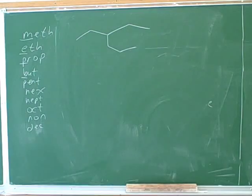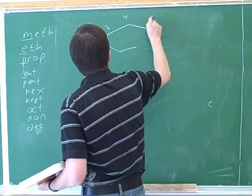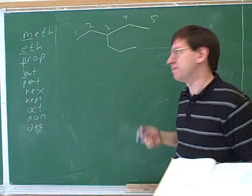OK, so what's the longest chain that you found? How many carbons? Six. Right. So at first, I think you might have started numbering like this. That gives us only five carbons.